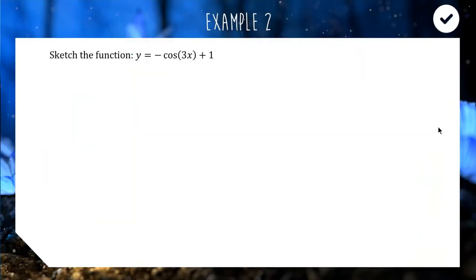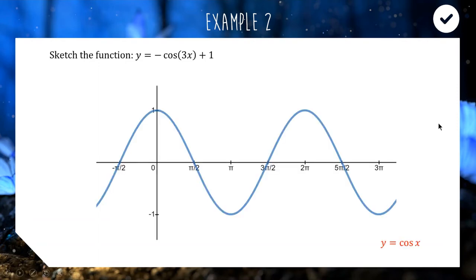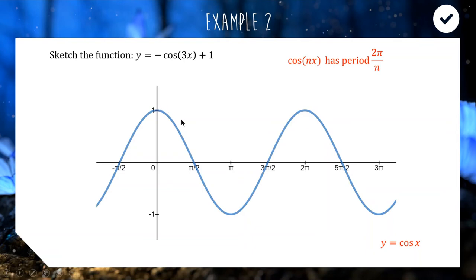For the next one we're going to look at the graph of y equals negative cos(3x) plus 1. We'll approach it the same way, starting with the basic cosine function: the exact same shape as sine, except it starts at 1 and returns to 1 at 2π. First, let's think about what the number inside the cosine is doing. That number affects how often the graph cuts through the x-axis, which we call the period. Your basic cosine function has a period of 2π.